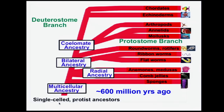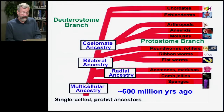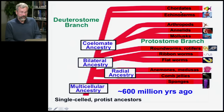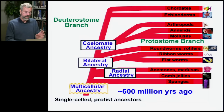We start out with single-celled protists like the protozoa, and we get multicellularity at about 600 million years ago. From this, we're going to see lineages arise that are radially symmetric, bilaterally symmetric, things that have a coelom or don't, and go all the way up to things with backbones. I'm going to start with the origins of multicellularity, reminding ourselves that this is the first innovation on the way to animals.